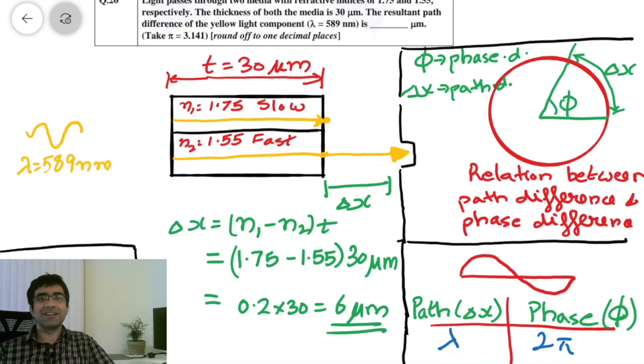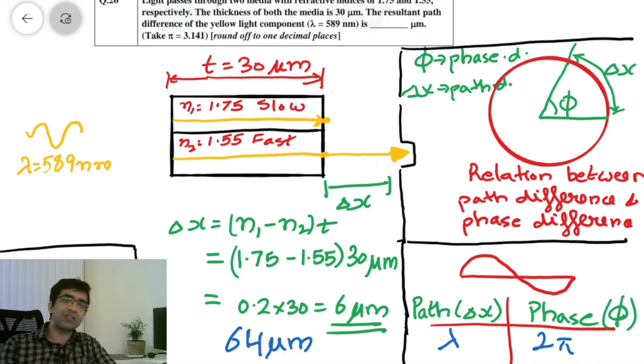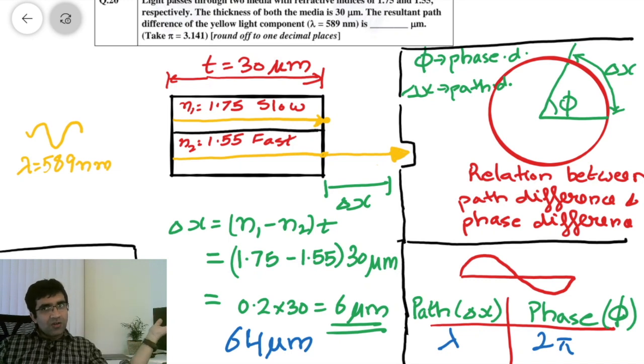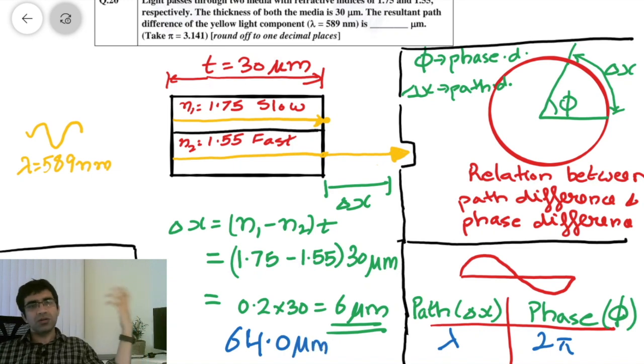But this is where the problem is. If you look at the official answer key, the correct answer that is given is 64 micrometers. And you don't know how you actually go from here to 64 micrometers. It's actually 64.0 micrometers. So how do you get that?